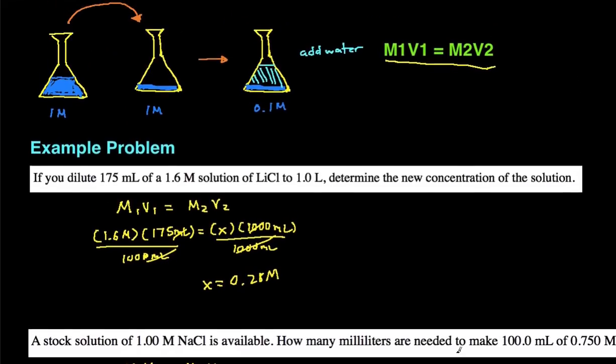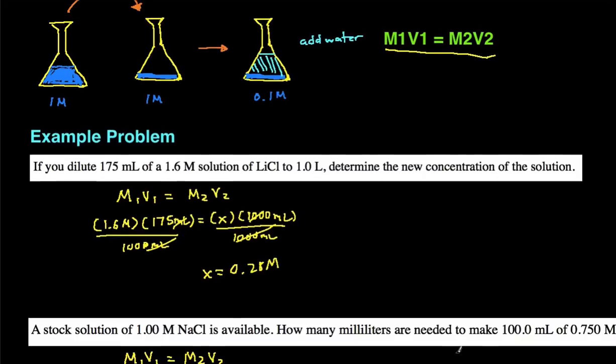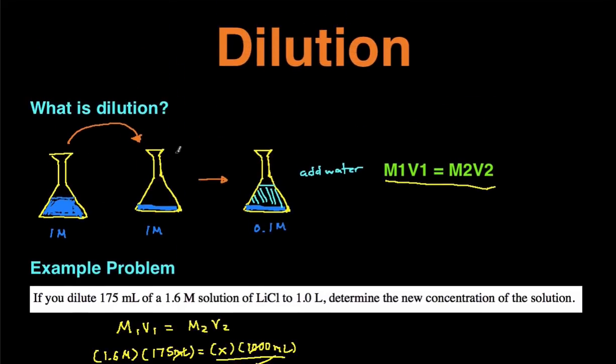And that's it. So those are two example problems of dilution. It really just comes down to knowing what the dilution process is and knowing that whenever you're dealing with dilution, you're going to be using M1V1 equals M2V2.